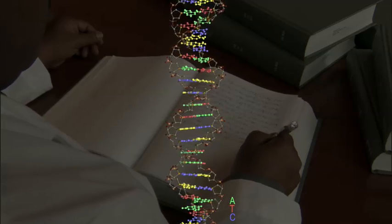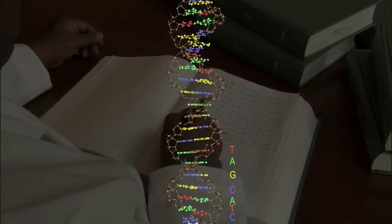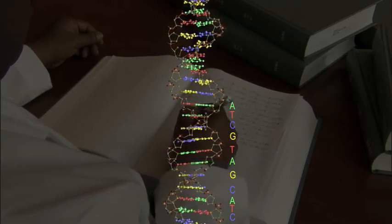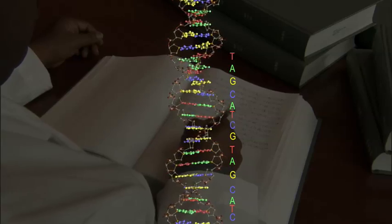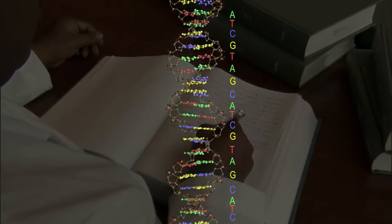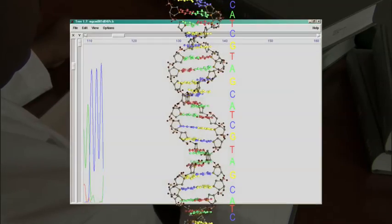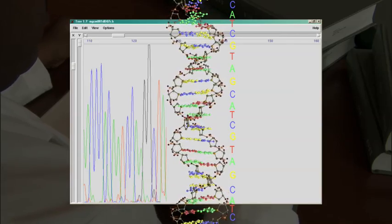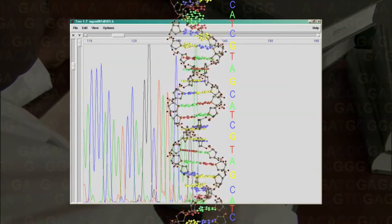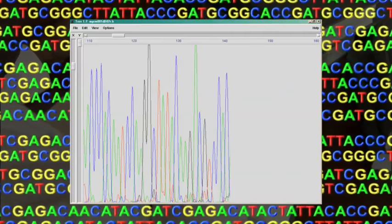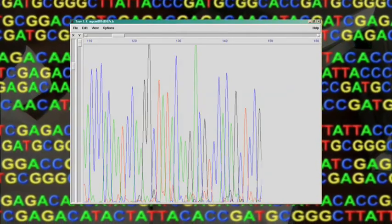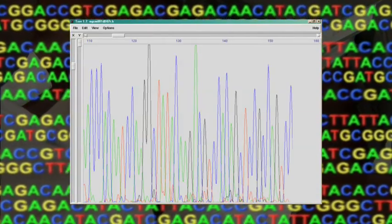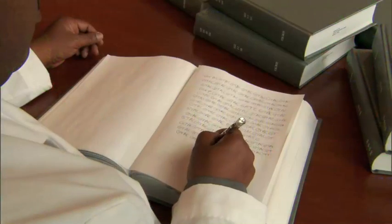Step by step, and three billion letters long, this is the formula for a human being. The existence of this tiny code written molecule by molecule inside each of our cells is a remarkable discovery all by itself. But scientists have now read that code, examined it letter by letter, and written it down.